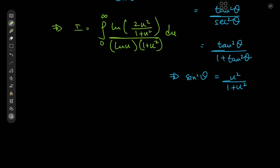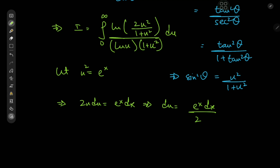Let's make another transformation. Since we have a log u term in the denominator, it would be fruitful to perform the substitution u² = eˣ. This implies that 2u du = eˣ dx, so du = eˣ dx / (2u). Since u² = eˣ, we have u = eˣ/², so du = eˣ/² dx / 2, which simplifies to du = (1/2)eˣ/² dx.